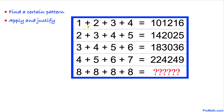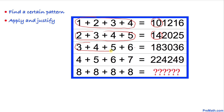We got these numbers one plus two plus three plus four — if we add all these numbers we are going to get 10. Likewise, two plus three plus four plus five is going to give us 14, and similarly three plus four plus five plus six is going to give us 18. Four plus five plus six plus seven is going to give us 22.